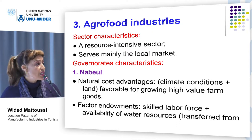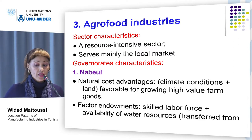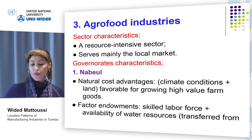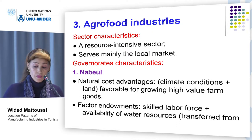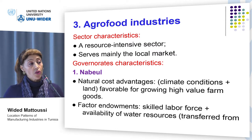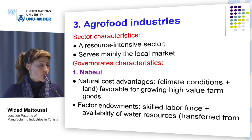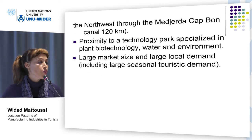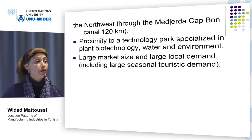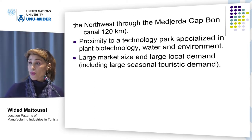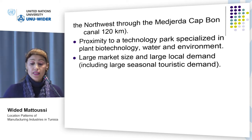Now let's describe the two governorates, starting with Nabeul, which is characterized by its natural cost advantages, including climate conditions and land favorable for growing high-value farm goods including citrus fruits, grapes, and strawberries. Nabeul is also characterized by its factor endowments, including its skilled labor pool due to the transfer of know-how from the Andalusians since the 16th century, and the availability of water resources due to the transfer of water from the northwest region through the Mid-Jardin Caban Canal. Nabeul is also characterized by its proximity to a technology park specialized in plant biotechnology, water, and environment, and by its large market size and large local demand, including strong seasonal touristic demand.